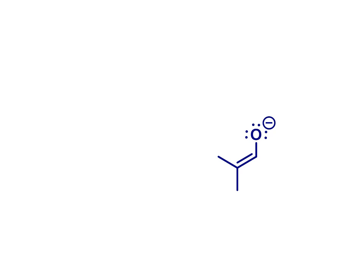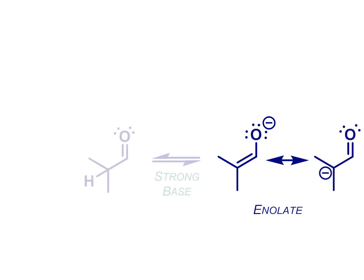Or sometimes, we might choose to make the deprotonated form of an enol, which looks like this and is called an enolate. The enolate is in fact a resonance-stabilized carbanion, and it's formed from the corresponding ketone or aldehyde by treatment with strong base. So let's talk a bit more about enols and enolates, how we make them, and what to do with them once we have made them.